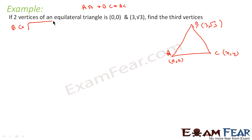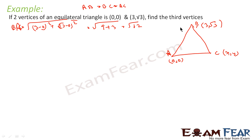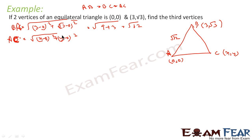Let's find BA first. BA is root of (3−0)² + (√3−0)², which comes out to be 3² = 9 plus √3² = 3, that is root of 12. So BA is root 12. Now let's find AC. AC is root of (X−0)² + (Y−0)², which is root of X² + Y².